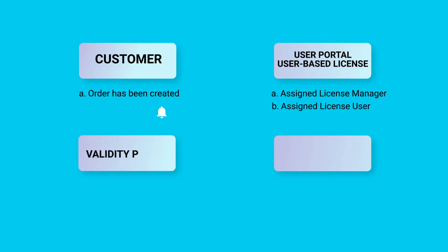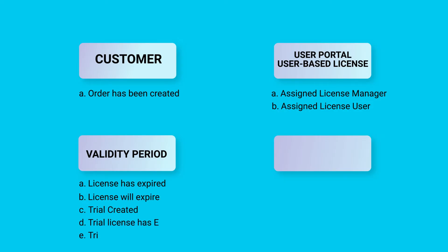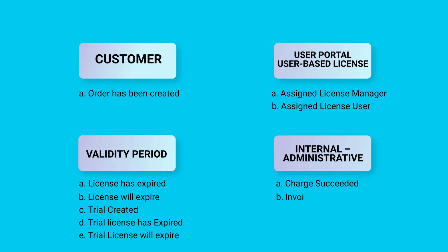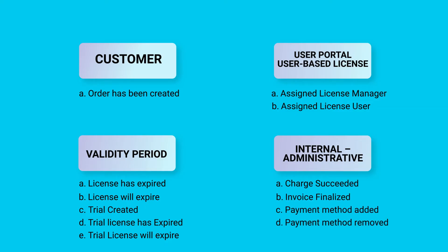The third category of notifications concerns the validity period of time-limited licenses or of trial licenses, such as whether a license has expired or will expire in the future. Finally, there are notifications intended just for administrators of the LicenseSpring account, such as a notification that an invoice has been finalized or that a payment method has been added or removed to the account.